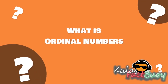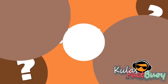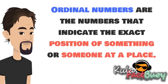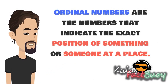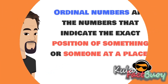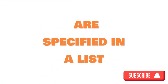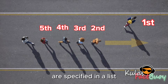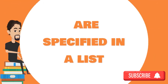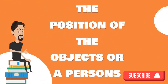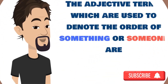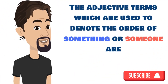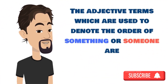What is ordinal numbers? Ordinal numbers are the numbers that indicate the exact position of something or someone at a place. If the number of objects or persons are specified in a list, the position of the objects or persons is defined by ordinal numbers. These are adjective terms used to denote the order of something or someone.